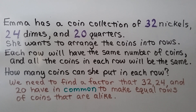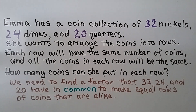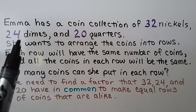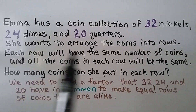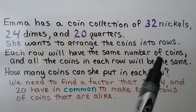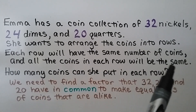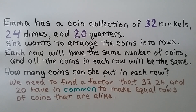Emma has a coin collection of 32 nickels, 24 dimes, and 20 quarters. She wants to arrange the coins into rows where each row has the same number of coins, and all coins in each row are the same type. We need to find a factor that 32, 24, and 20 have in common to make equal rows of coins that are alike.